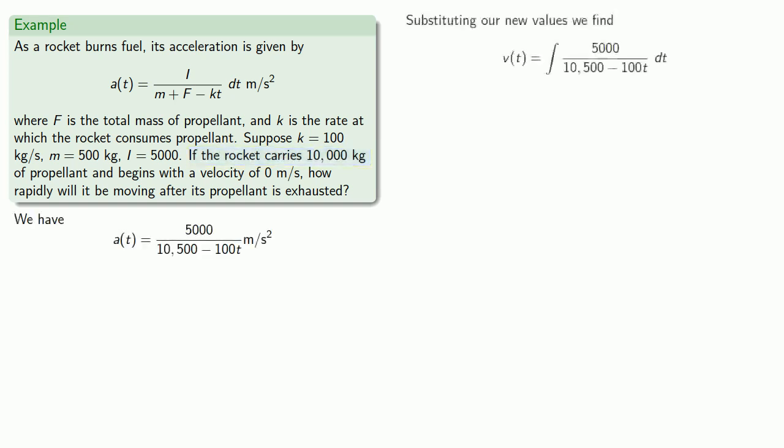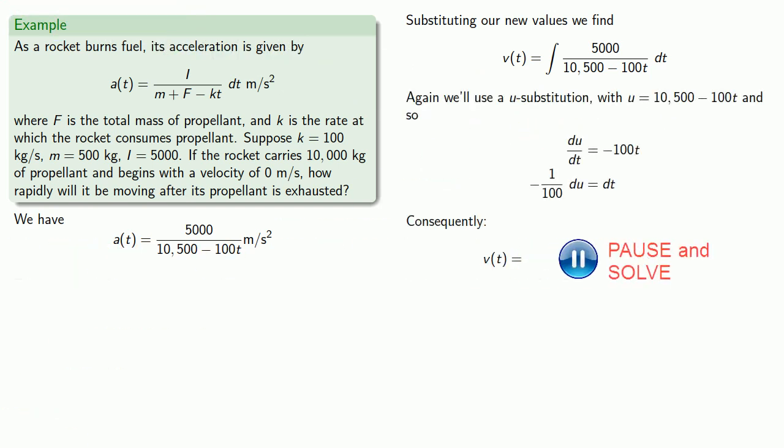So we'll substitute in our new values to find velocity as the antiderivative of acceleration. We'll do a U substitution. Use the initial velocity of zero to find our constant.